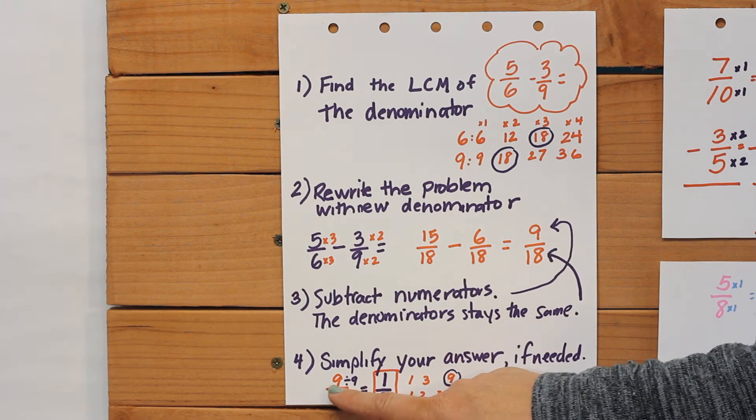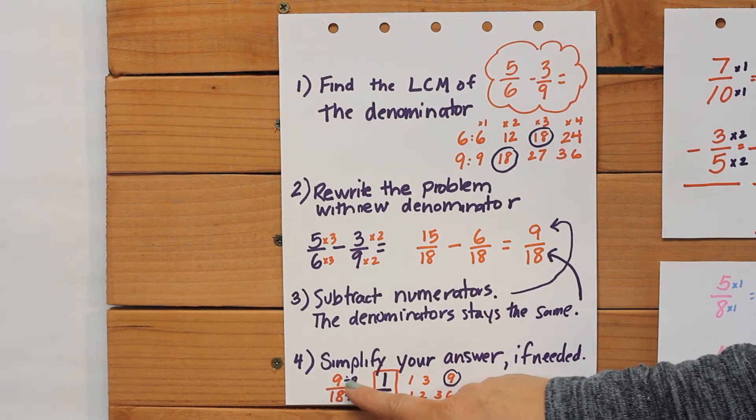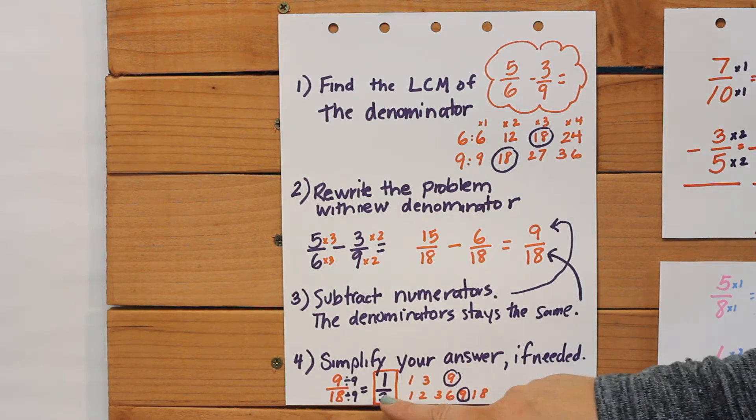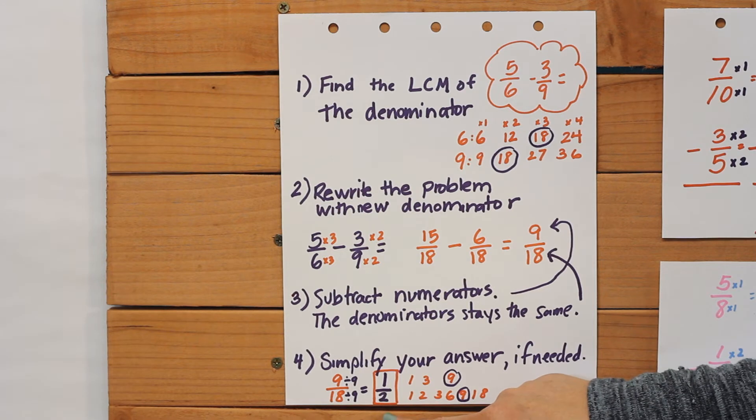And we know that nine goes into eighteen very easily. Nine divided by nine is one. Eighteen divided by nine is two, and so 1/2 is our final answer.